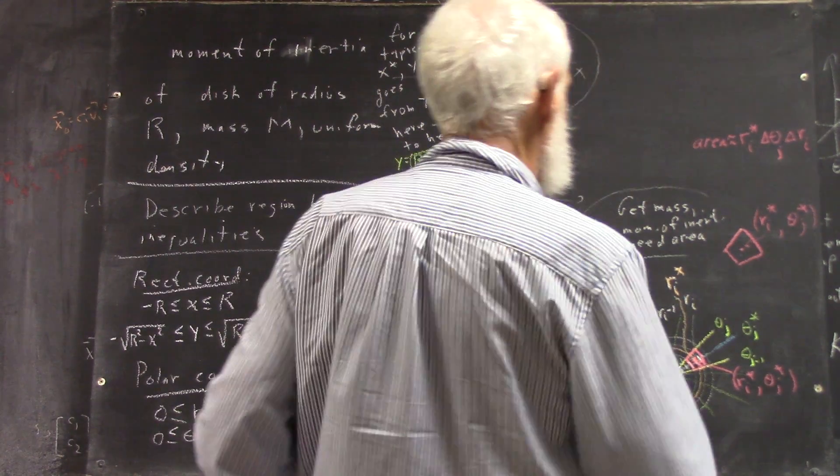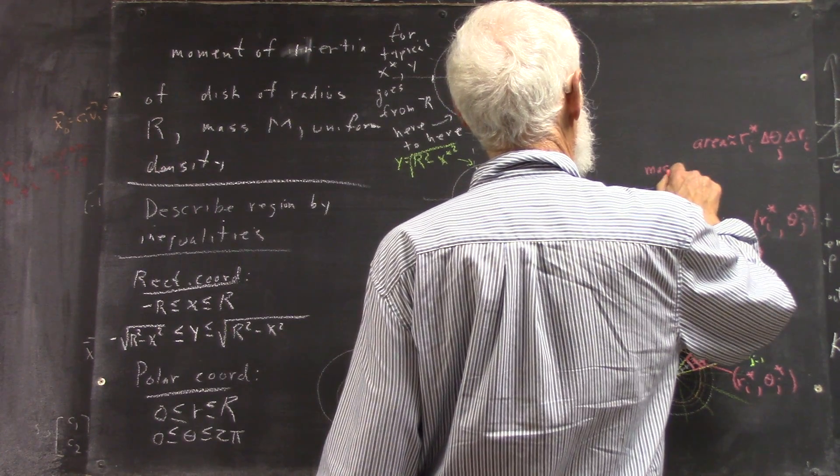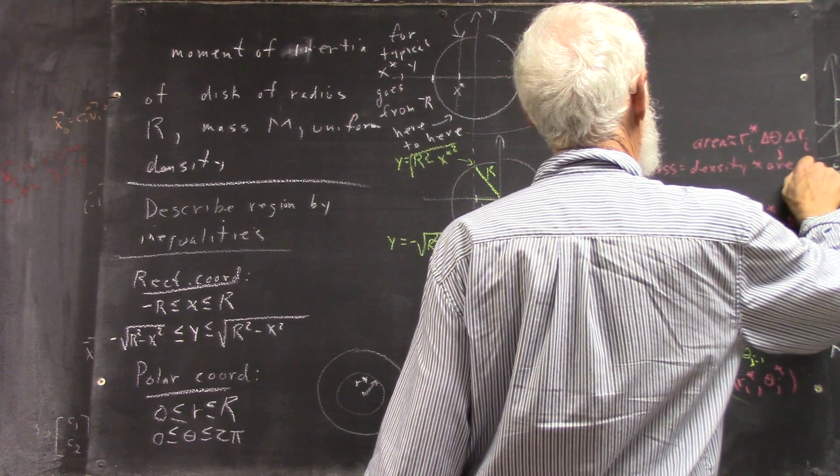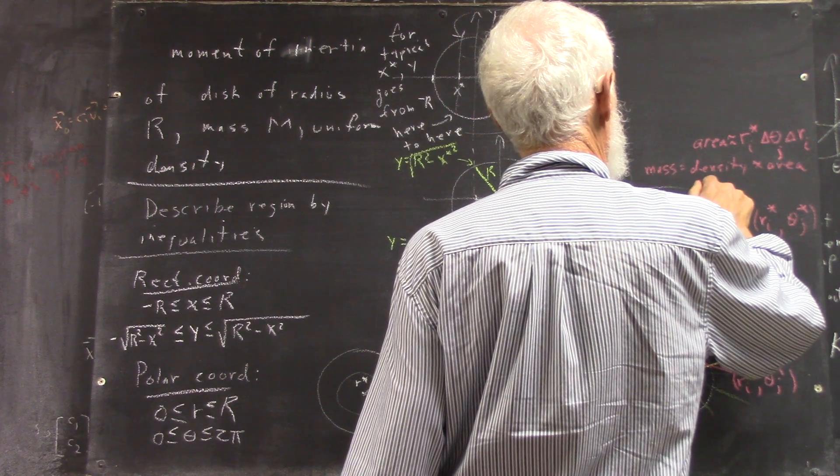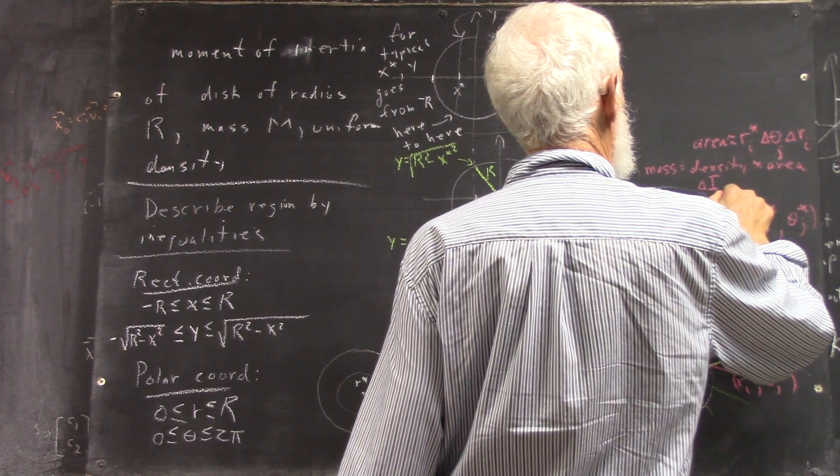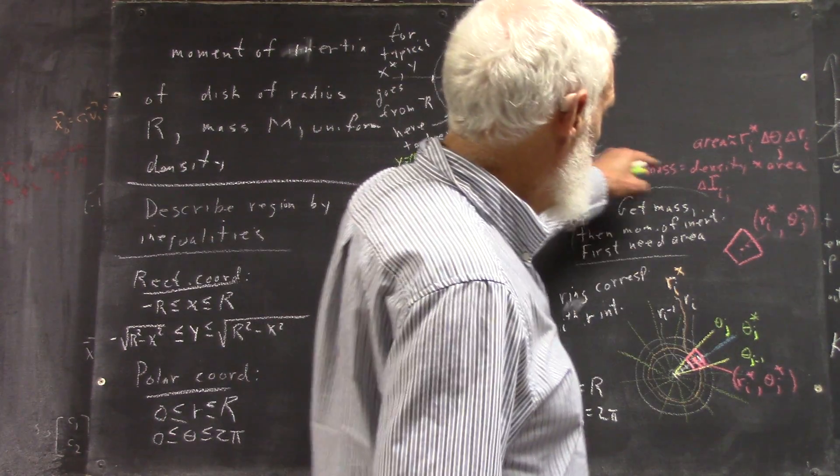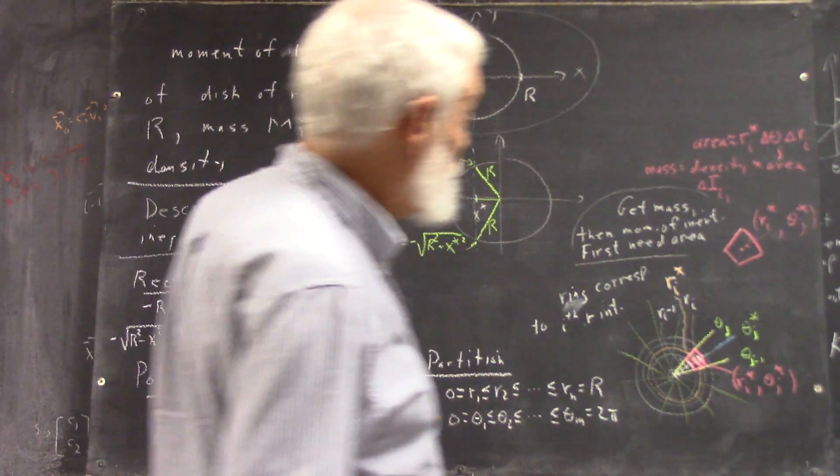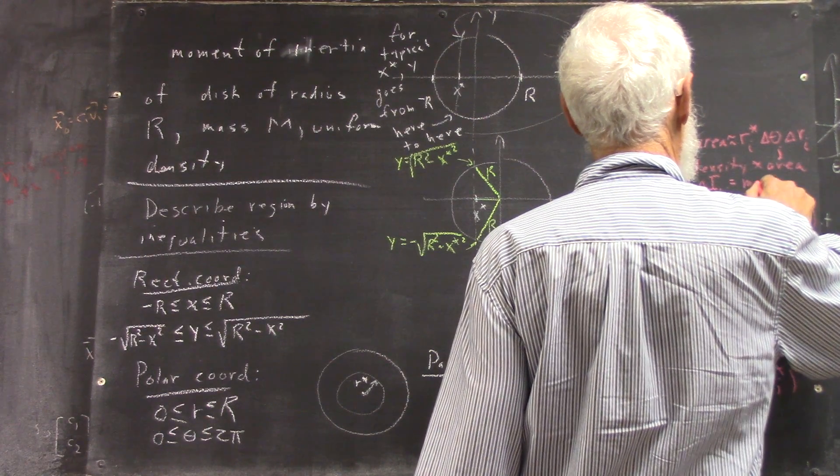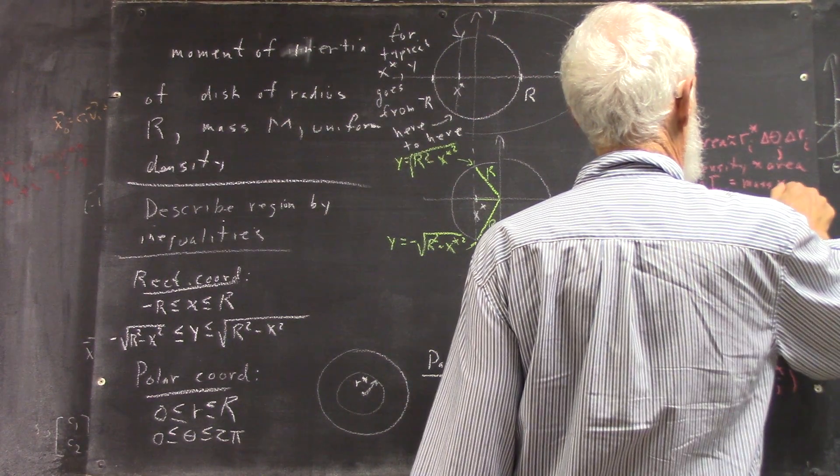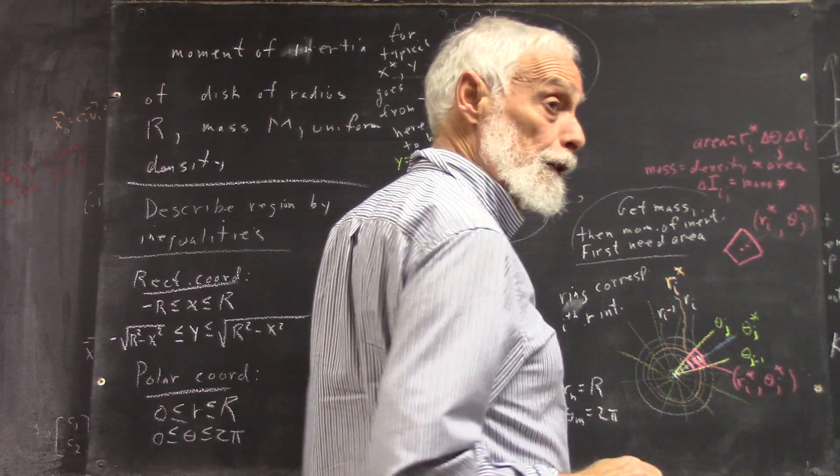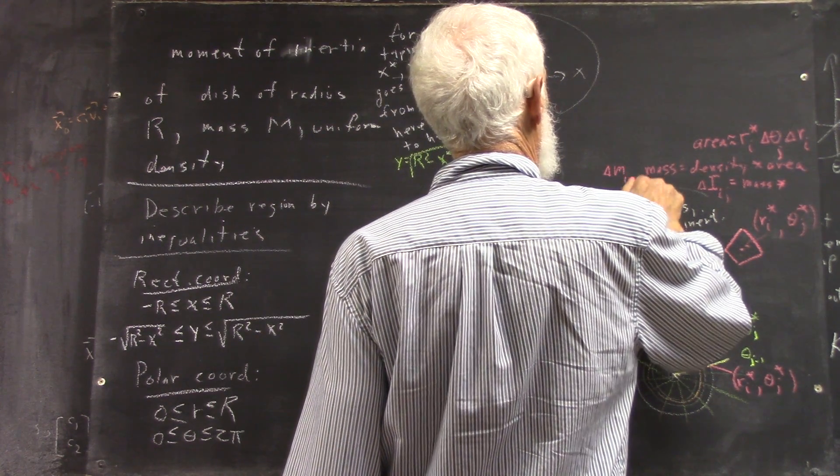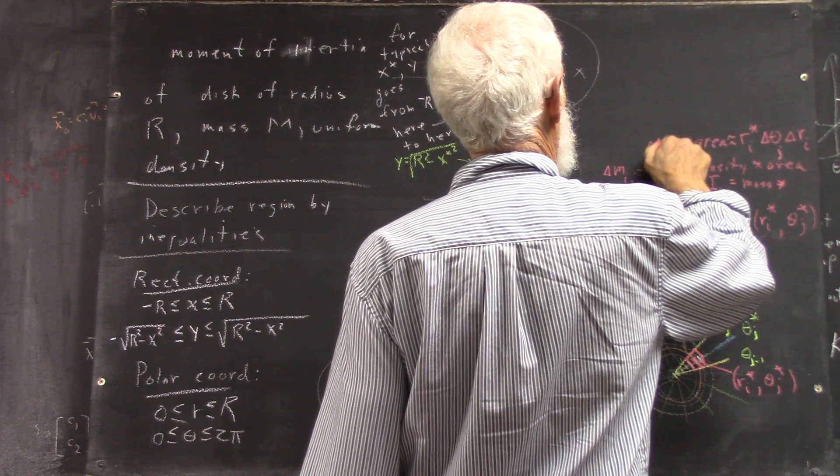Okay? So the mass is the density times the area, and the moment of inertia, which I'll call delta I sub IJ, because it's a moment of inertia of the IJ element of this partition, right? Now, I would use a delta M for mass and a delta A for area. Okay? And maybe I order. That would be a delta M IJ, right? And this would be delta A IJ.